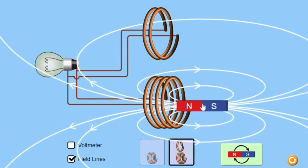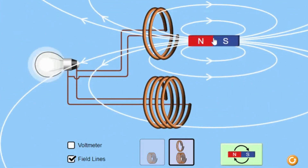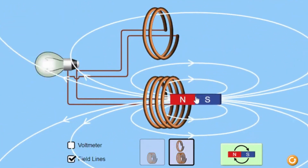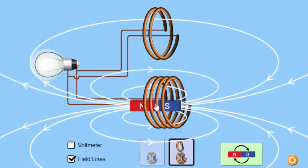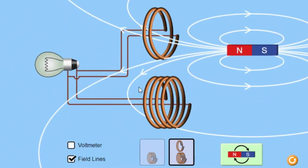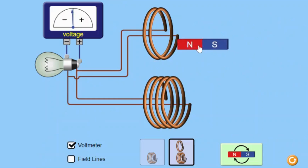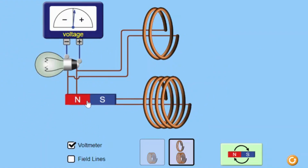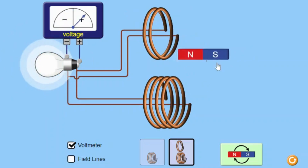To implement the Faraday's Law simulation in the classroom, teachers can follow these steps. Begin with a brief introduction to the concept of electromagnetic induction and Faraday's Law. Provide examples to illustrate these concepts and explain how the simulation will help students understand them. Demonstrate the simulation to the class, showing how to adjust the number of coil turns and the speed of the magnet, and observe the brightness of the bulb.